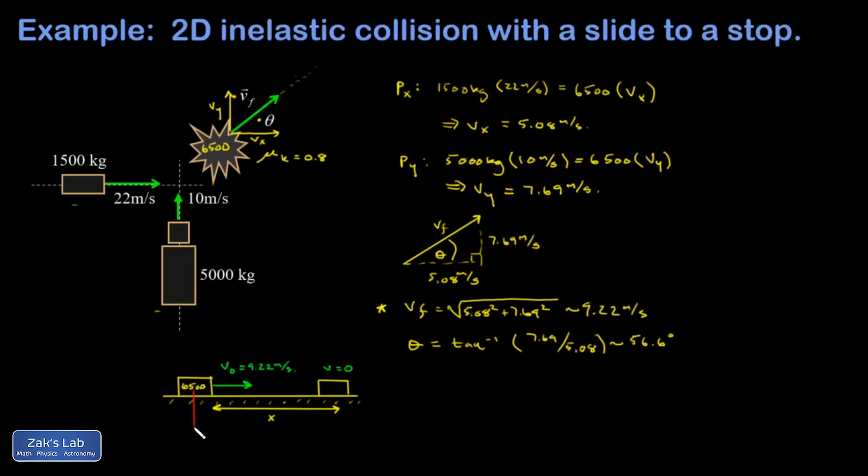Just getting force vectors into the diagram: there's mg pointing down, there's the normal force pointing up, and there's nothing else tampering with the vertical direction in this problem. So the normal force is just equal to mg: 6500 times 9.8, and that's 63,700 newtons.